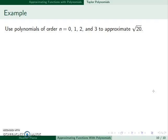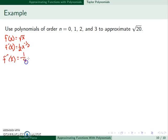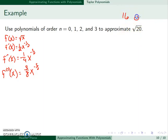Next, we'll use polynomials of order 0, 1, 2, and 3 to approximate the square root of 20. Our function will be f of x equal to the square root of x. f prime is 1 half x to the minus 1 half, the second derivative is minus 1 fourth x to the minus 3 over 2, and the third derivative is 3 over 8 times x to the negative 5 over 2. We need to choose a center — since we're approximating the square root of 20, we center at 16 or 25, the nearest perfect squares. Since 16 is only 4 away and 25 is 5 away, we'll use 16.